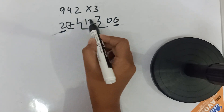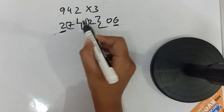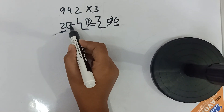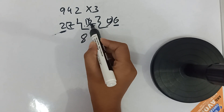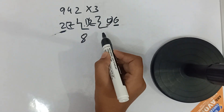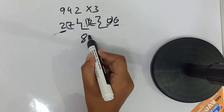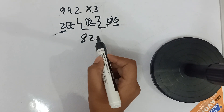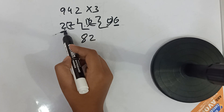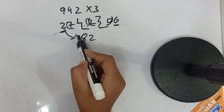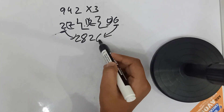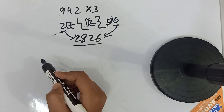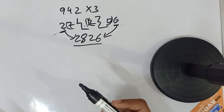Now we make brackets. 7 plus 1 is 8. Then 2 and 0 — we carry the 2 down. Then we write 6. So our answer is 2826.